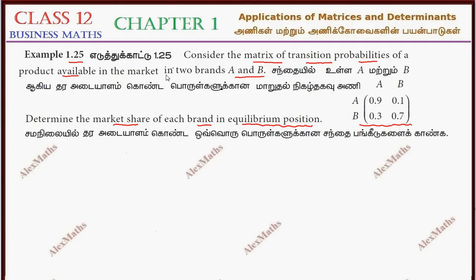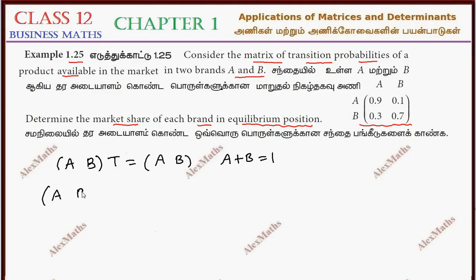At the equilibrium position, we have a matrix with two brands A and B. This is the transition matrix with values: 0.9, 0.1, 0.3, 0.7.